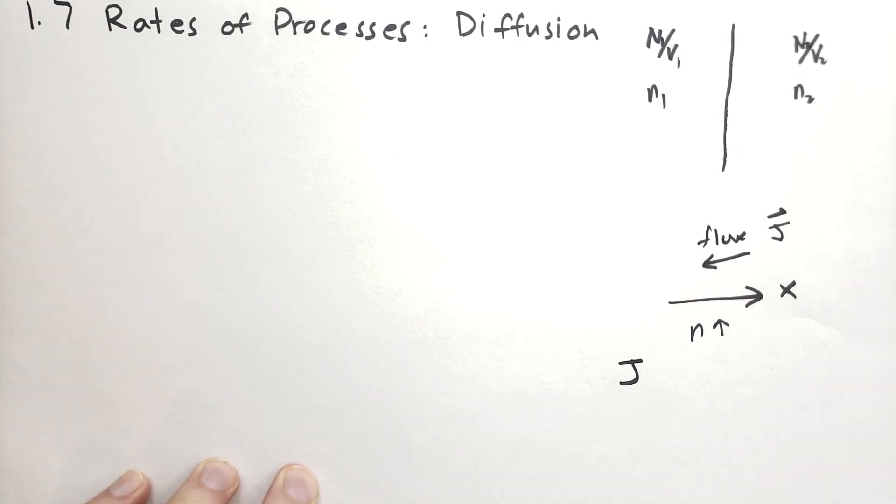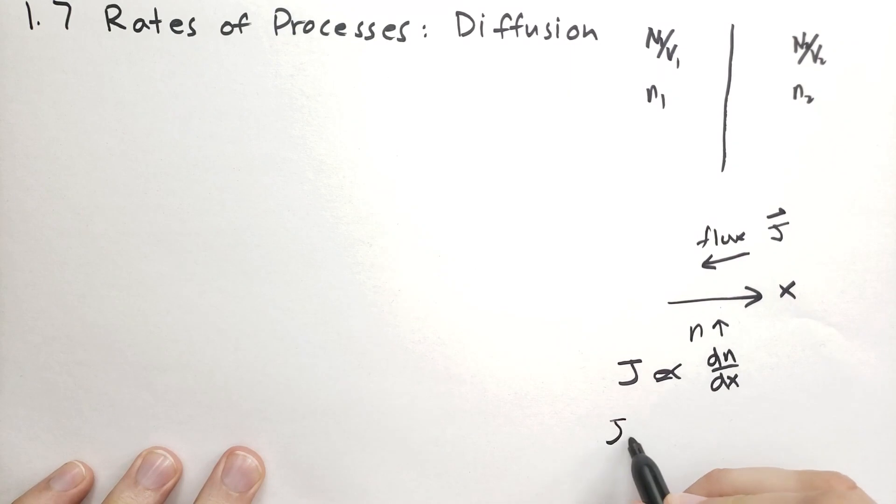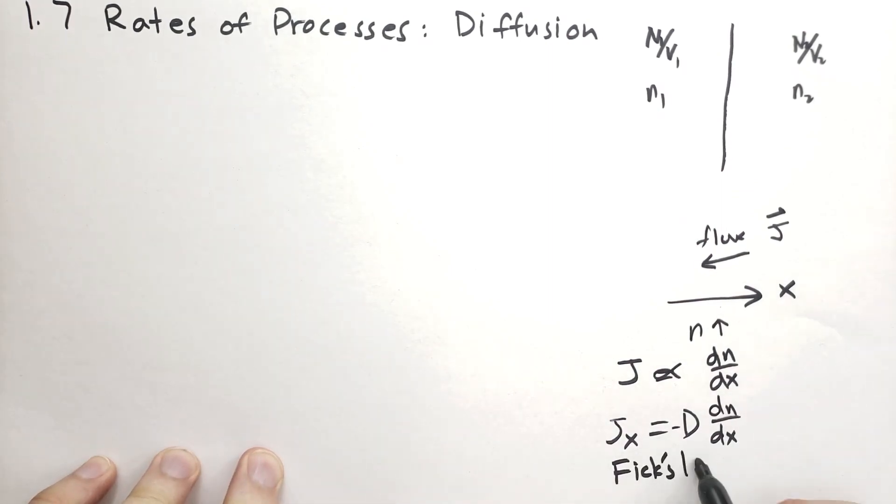So we could say that J, the magnitude of the J vector, would increase, it's proportional to the increase in concentration as you move along in the X direction. And there's not much else we can derive or think about that might change the speed at which the concentration changes. And so we just rewrite this. We're going to say Jx is equal to some constant D, well, minus D, times dN over dX. Because if the concentration is increasing over here, the flux is towards the other direction. This has a name. It's called Fick's Law. The constant D is called the diffusion coefficient.